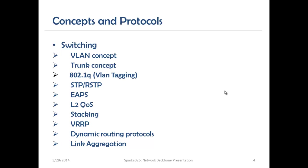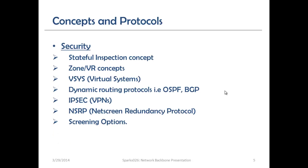We also have Layer 2 QoS stacking, which is when you have more than one switch and want to stack them. Then there is VRP, dynamic routing protocols, and link aggregation. Link aggregation means combining multiple ports together to build more capacity and bandwidth. If you can learn all of this, the better for you.